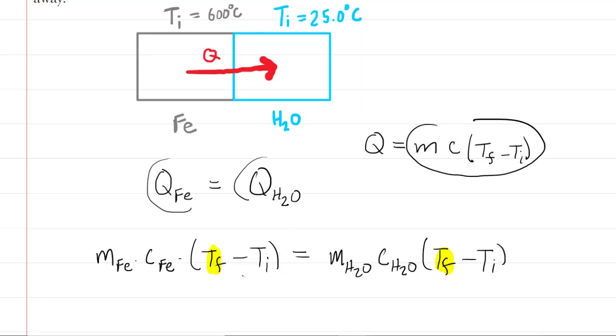We know that the iron is going to be losing heat, as indicated by that red arrow, and that the water will be gaining heat. And what that means is that this quantity on the right-hand side, which represents the amount of heat that the water is gaining, is going to be a positive quantity, because the final temperature for the water is going to be greater than the initial temperature of the water, right? Because it's gaining heat. So that means that this quantity, again, on the right side will be positive.